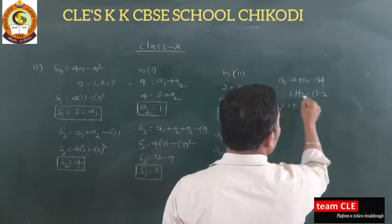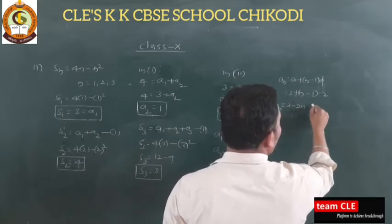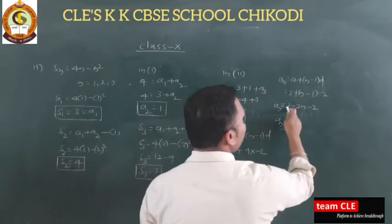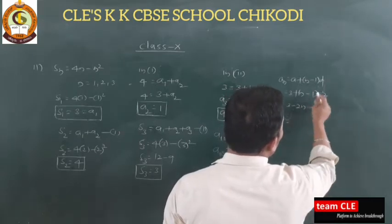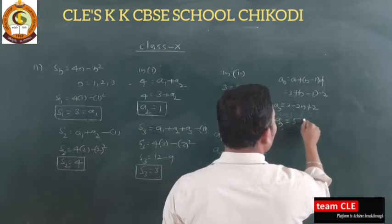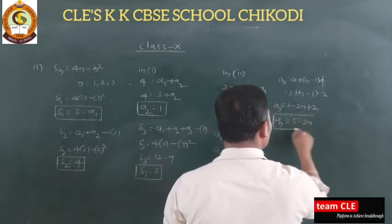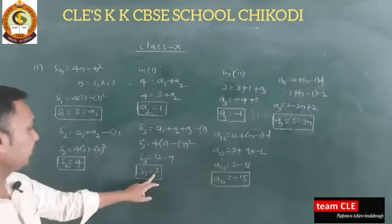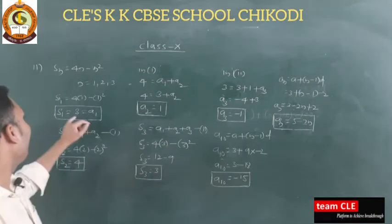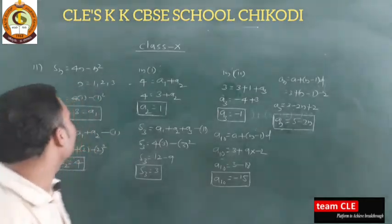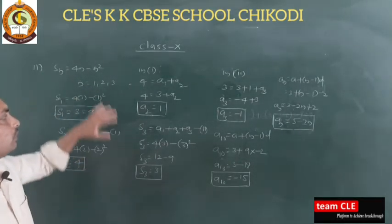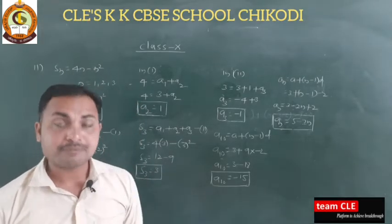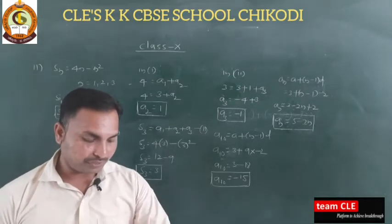For the nth term: aₙ = a + (n−1)d = 3 + (n−1)×(−2) = 3 − 2n + 2 = 5 − 2n. So the nth term is 5 − 2n, the 10th term is −15, S₃ = 3, a₂ = 1, a₃ = −1, and a₁ = 3. That completes question number 11.